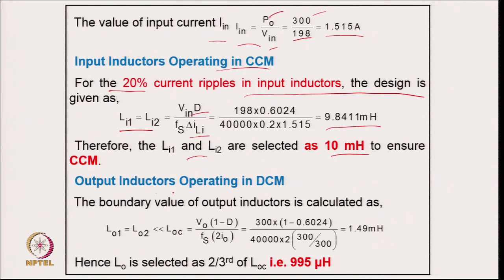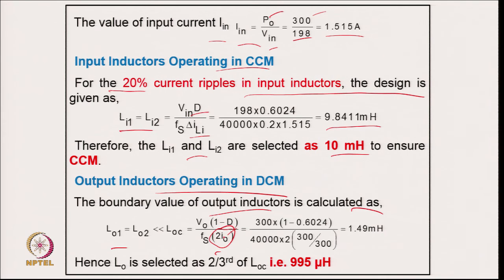Coming to the output inductor design for discontinuous mode: the boundary condition uses twice the load current as the ripple (since inductor current equals output load current). Putting in all values gives 1.949 mH, and to ensure DCM at the minimum input voltage (which causes maximum inductor current), the selected value must be safely below this.